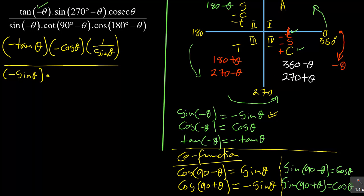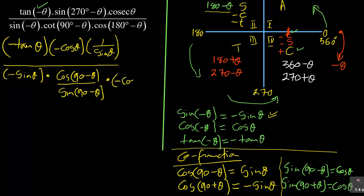Then we have cot(90 − θ). Cot is 1 over tan, which is the same as cos over sin, so I can write this as cos(90 − θ) over sin(90 − θ). Then we multiply by cos(180 − θ), which is in the second quadrant where cosine is negative, giving −cos θ. You need to know your CAST diagram because all reduction rules are based on it.